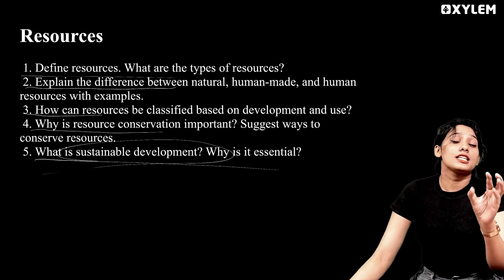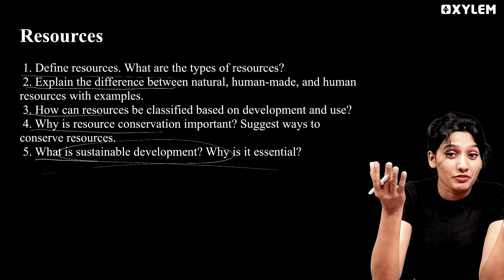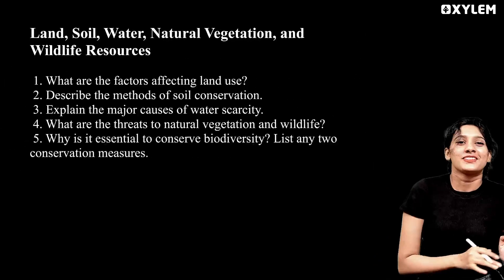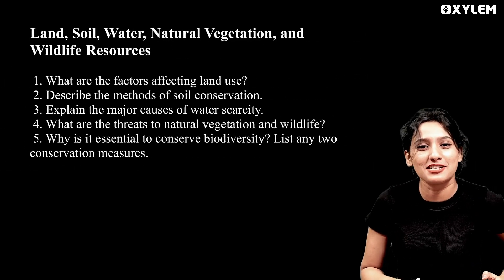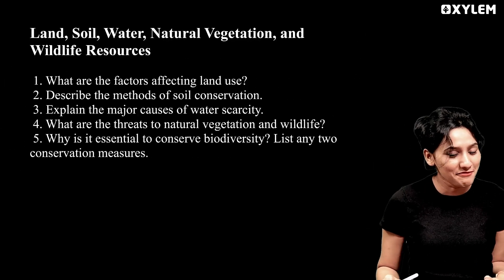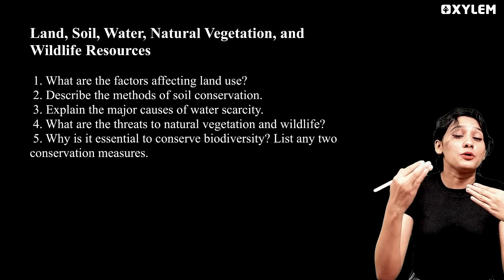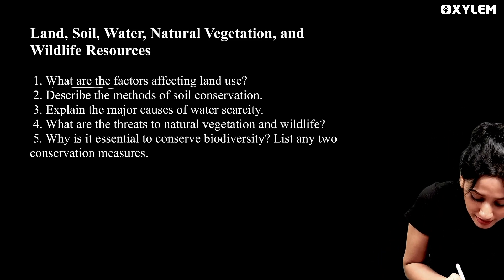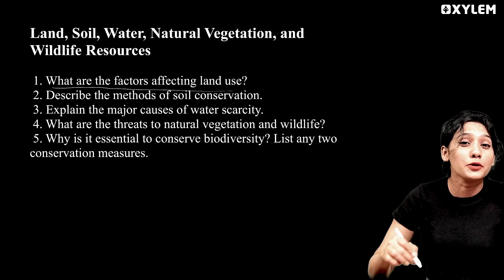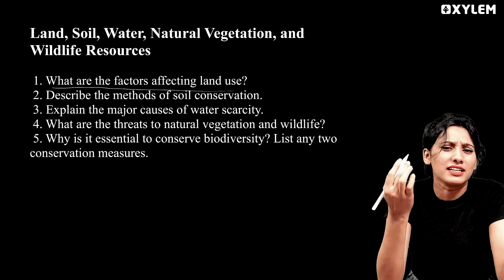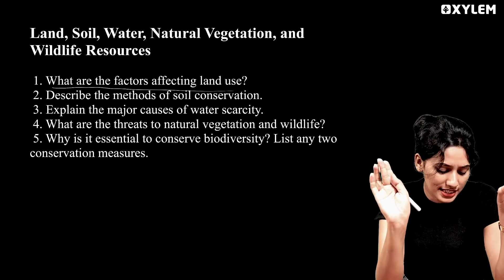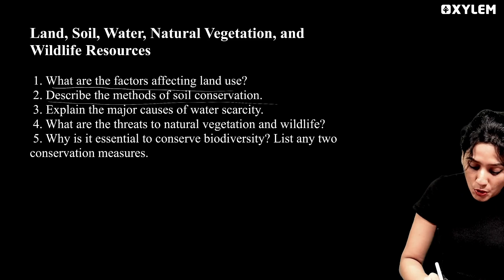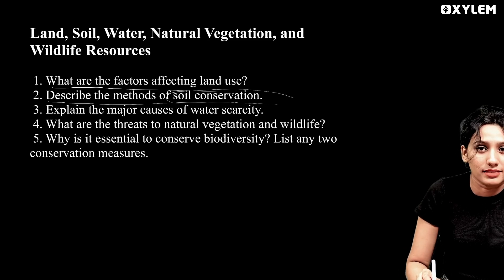In the second chapter — Land, Soil, Water, Natural Vegetation and Wildlife Resources — the important questions are: What are the factors affecting land use? Describe the methods of soil conservation. Soil conservation methods are very important.